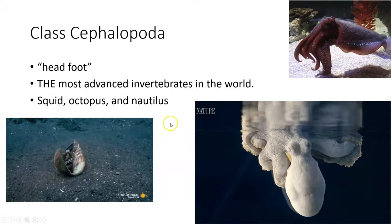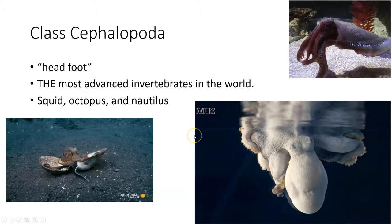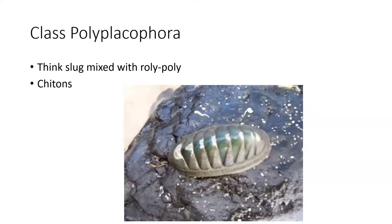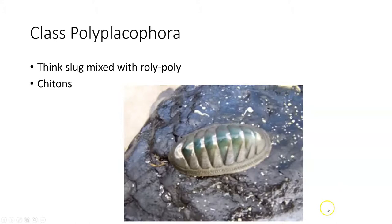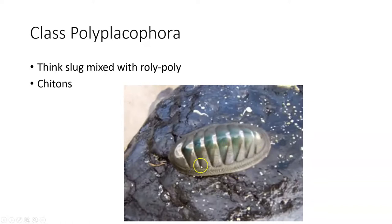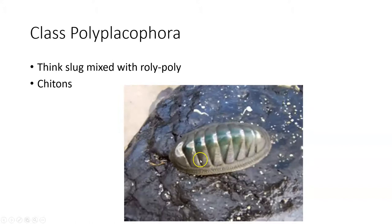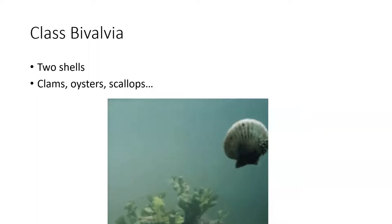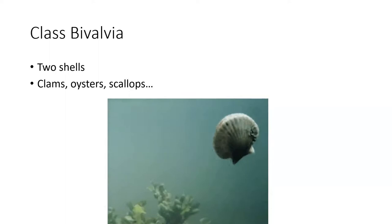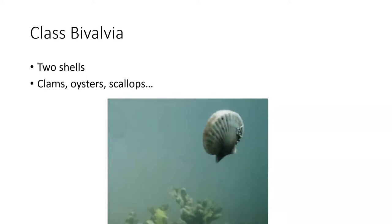Class Polyplacophora means 'many plates' — think of a roly-poly body plan but in slug form. Chitons eat algae off the surface of rocks. Class Bivalvia means they have two shells — this includes clams, oysters, mussels, and scallops. Scallops can clap their shells together to swim around, which isn't graceful but it works.